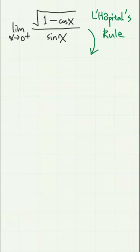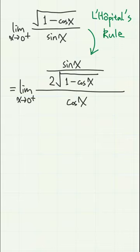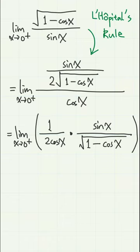Then we have sine x over 2 square root of 1 minus cosine x in the numerator, and cosine x in the denominator. Let's write this as 1 over 2 cosine x times sine x over square root of 1 minus cosine x.